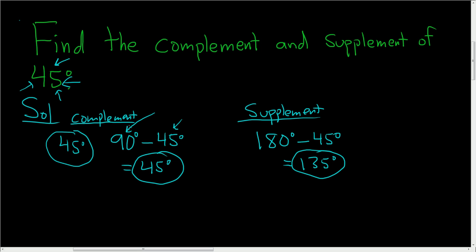So to find the complement, you always take 90 and subtract your angle. To find the supplement, just take 180 and subtract your angle.